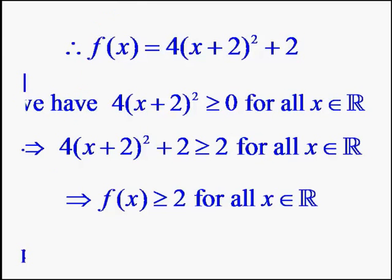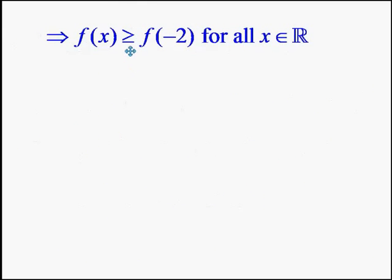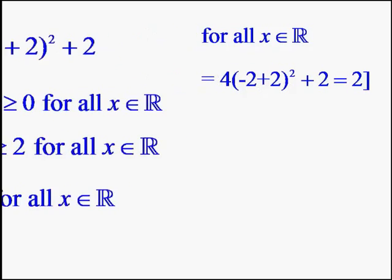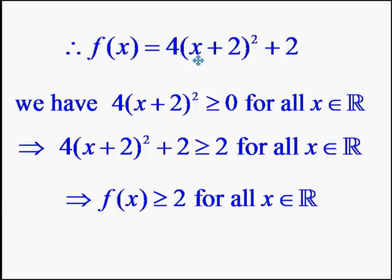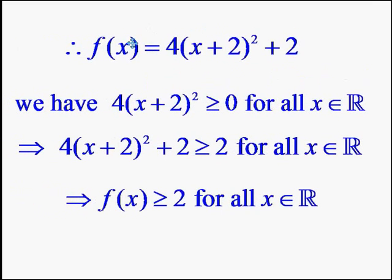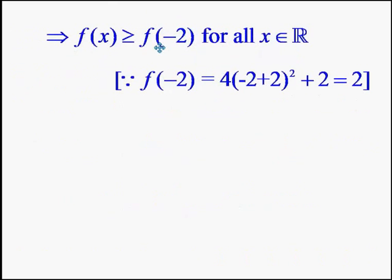From this it follows that f(x) ≥ f(-2) for all x belonging to R. Let us see how f(-2) has come here. Evaluating the function at x = -2, f(-2) is simply 2 because the square term vanishes. That is how we get f(-2) = 2. Since f(x) ≥ 2, this 2 is replaced by f(-2).